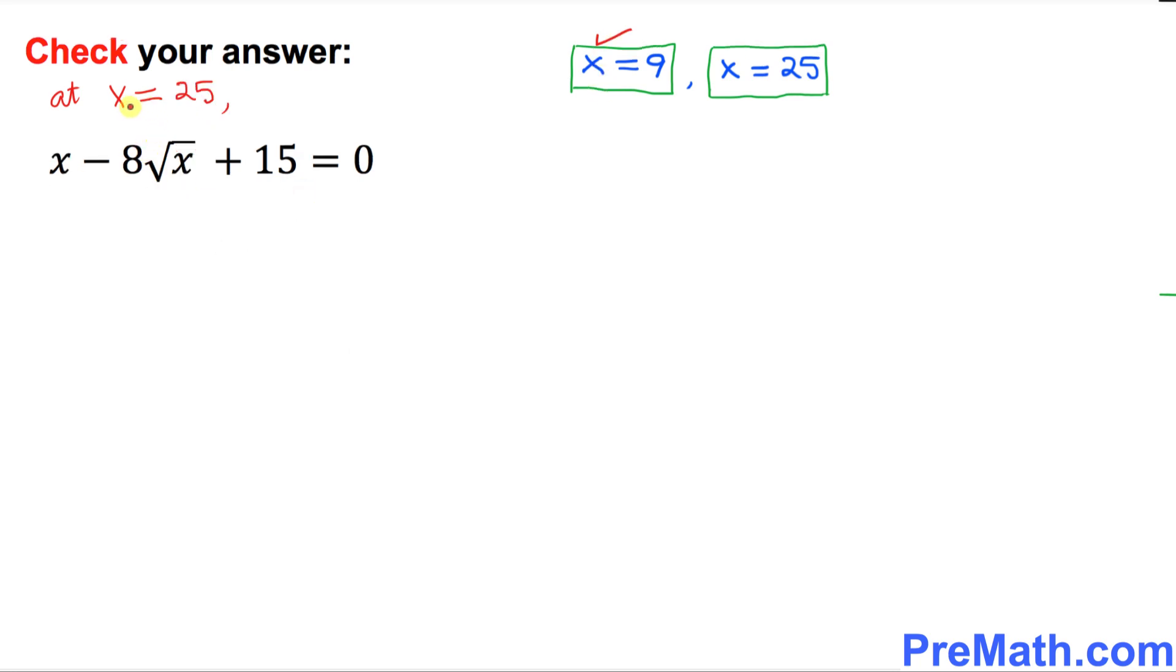So next, we're going to check x equal to 25. So wherever you see x, replace it by 25. So this becomes 25 minus 8 times square root of 25 plus 15. Is it equal to the right-hand side, which is 0? Let's simplify. We know that the square root of 25 is 5. So I can write 25 minus 8 times 5 plus 15.